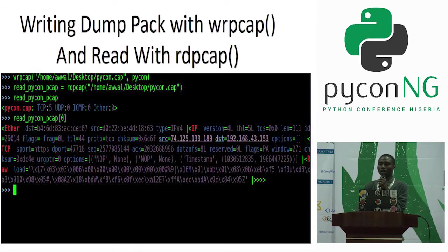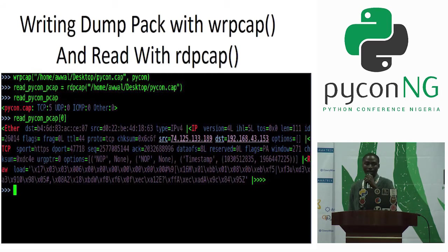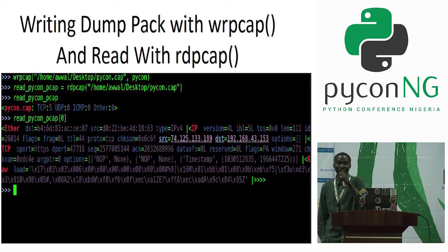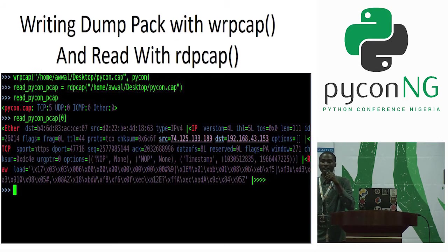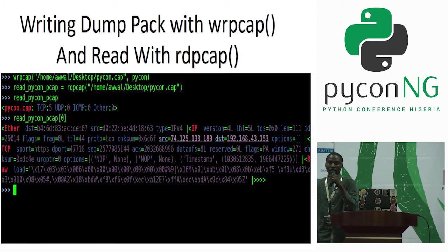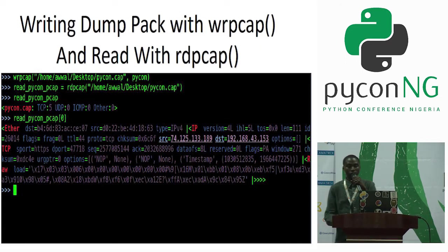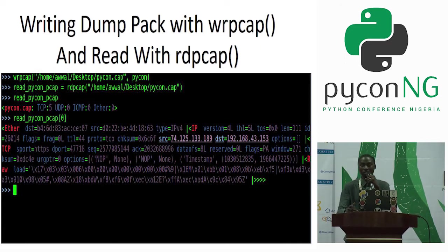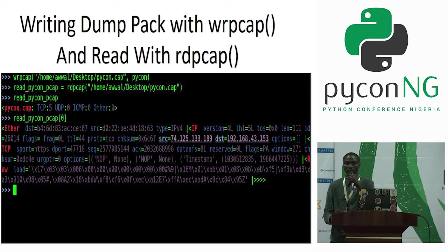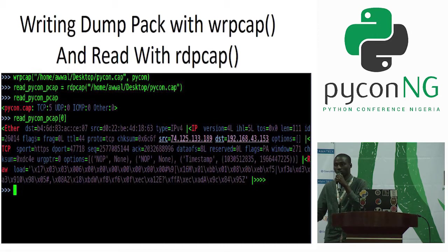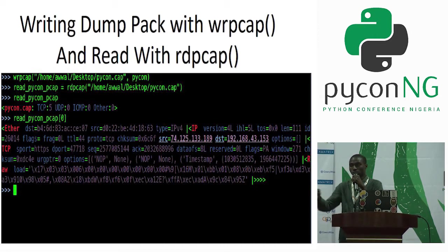Writing dump packets with wrpcap and reading with rdpcap. For example, if you already have a packet file you captured with Wireshark and exported it, but you now have a new system — maybe your phone. Because anywhere you go, you can at least have a Python interactive shell. You can go to the Play Store and have Python installed, then just create a variable and import the packets from the Wireshark file. You can also export from Scapy to Wireshark.